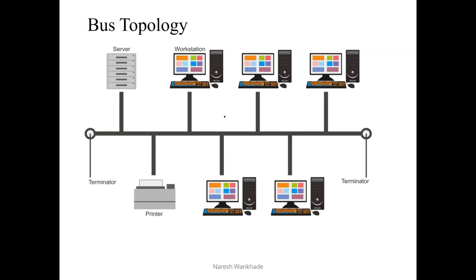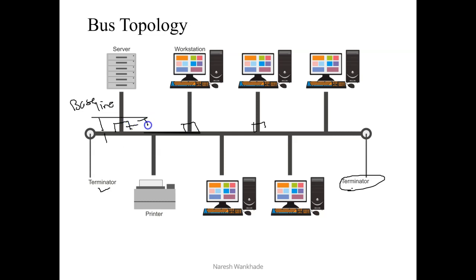This is a diagram of bus topology. You can see that there is one main link which is terminated with the help of terminators at both ends. This link is known as the baseline, and all nodes of this bus topology are connected on this baseline. These nodes are connected to the baseline with the help of a connector known as a tap. These are nothing but connectors — for every node there is a tap, and this link between the node and the baseline is known as a drop link.